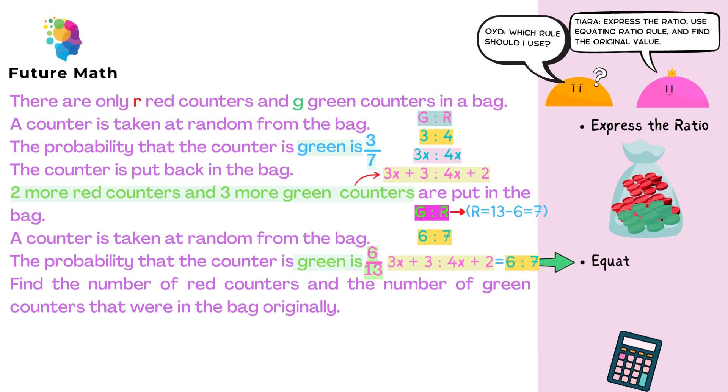We now have equating ratios, and this means we can write this as a fraction and create an equation to solve for x. So we do 3x plus 3 over 4x plus 2 equals 6 over 7.